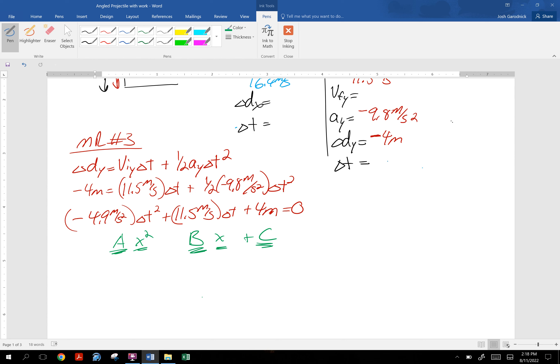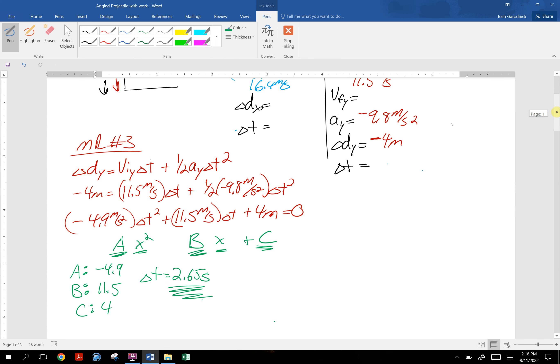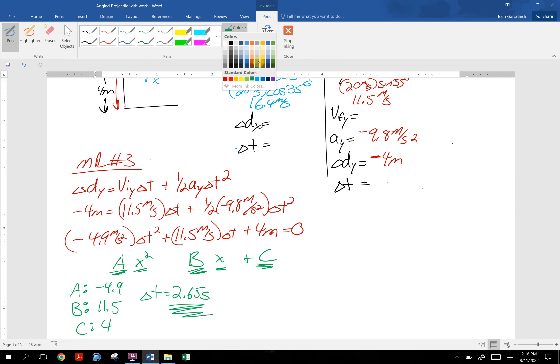I use the quadratic, and in your calculator, it should be asking you like A, and you're going to put in negative 4.9. B, and you're going to say 11.5. C, and you're going to say 4, and it's going to spit out two times. One of them is 2.65 seconds, and the other is negative 0.308. Yeah, we don't go back in time. Not that I'm aware of, anyway. So that's the time it takes for the object. What do you want this object to be? You have to let me know. If you watch this video, you tell me, what is this object? Then I know you watched the video.